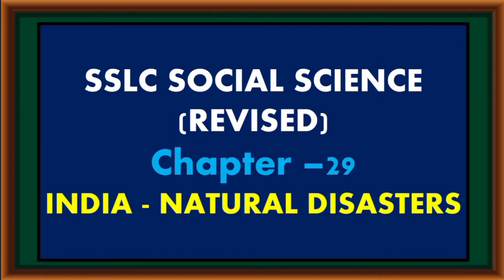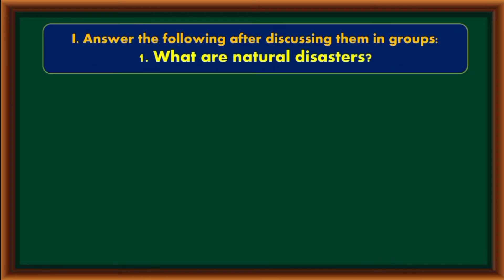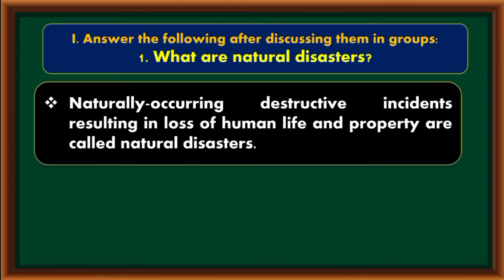Standard Social Science Revised Textbook Videos, Chapter 29: India Natural Disasters. What are natural disasters? Naturally occurring destructive incidents resulting in loss of human life and property are called natural disasters.